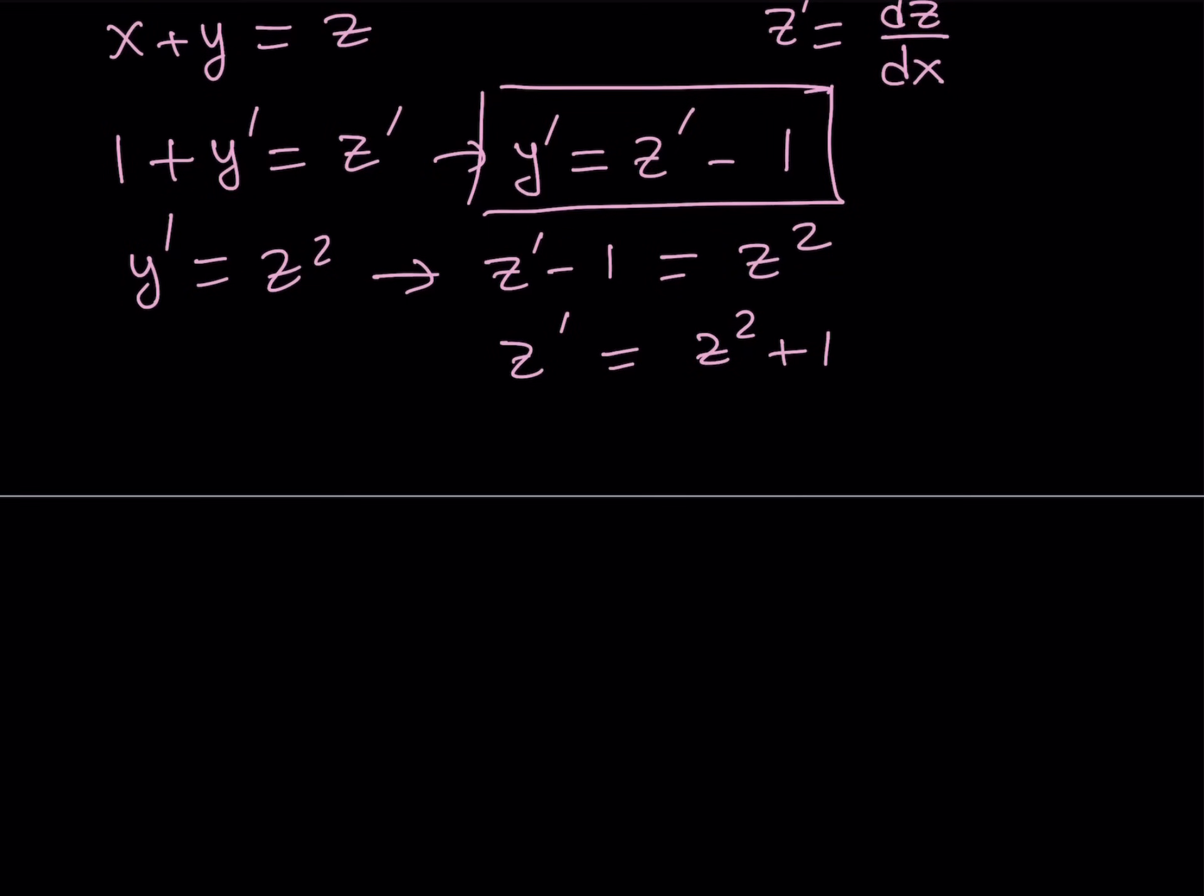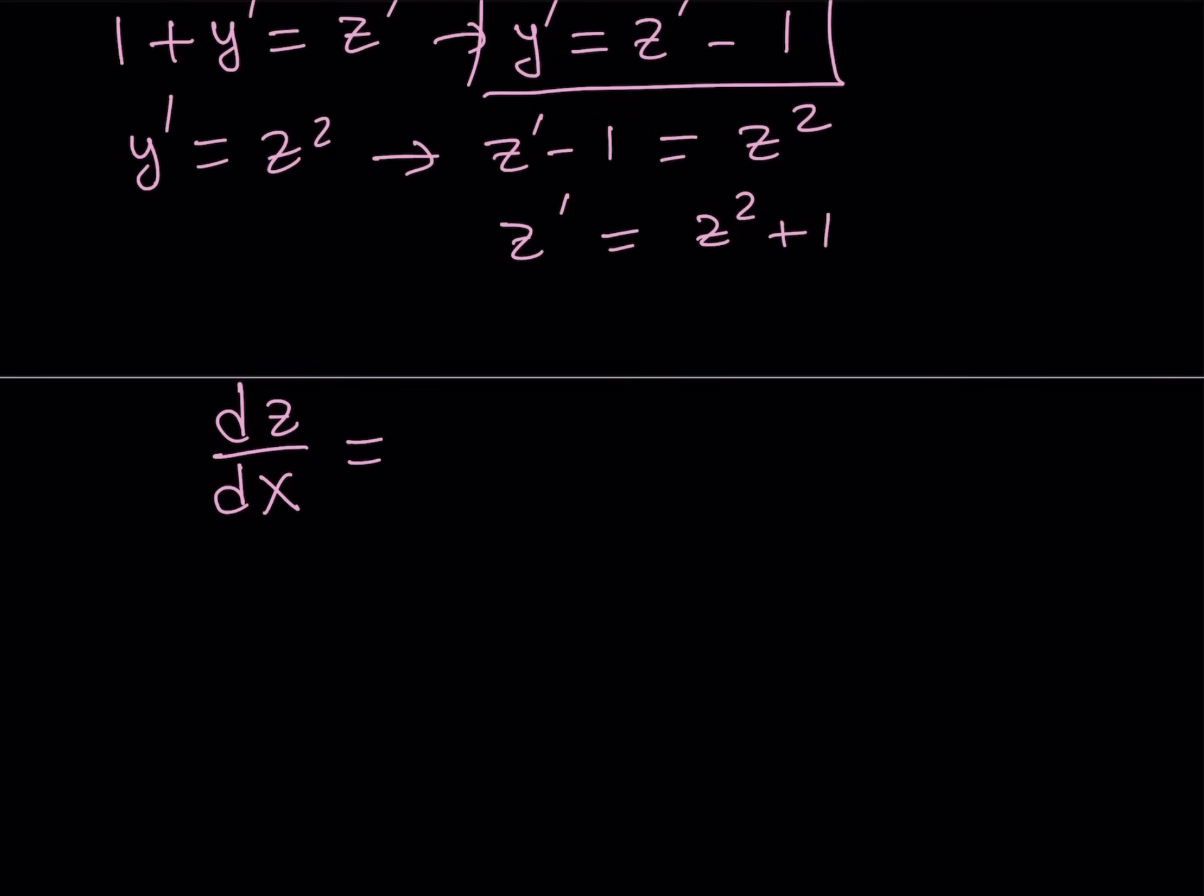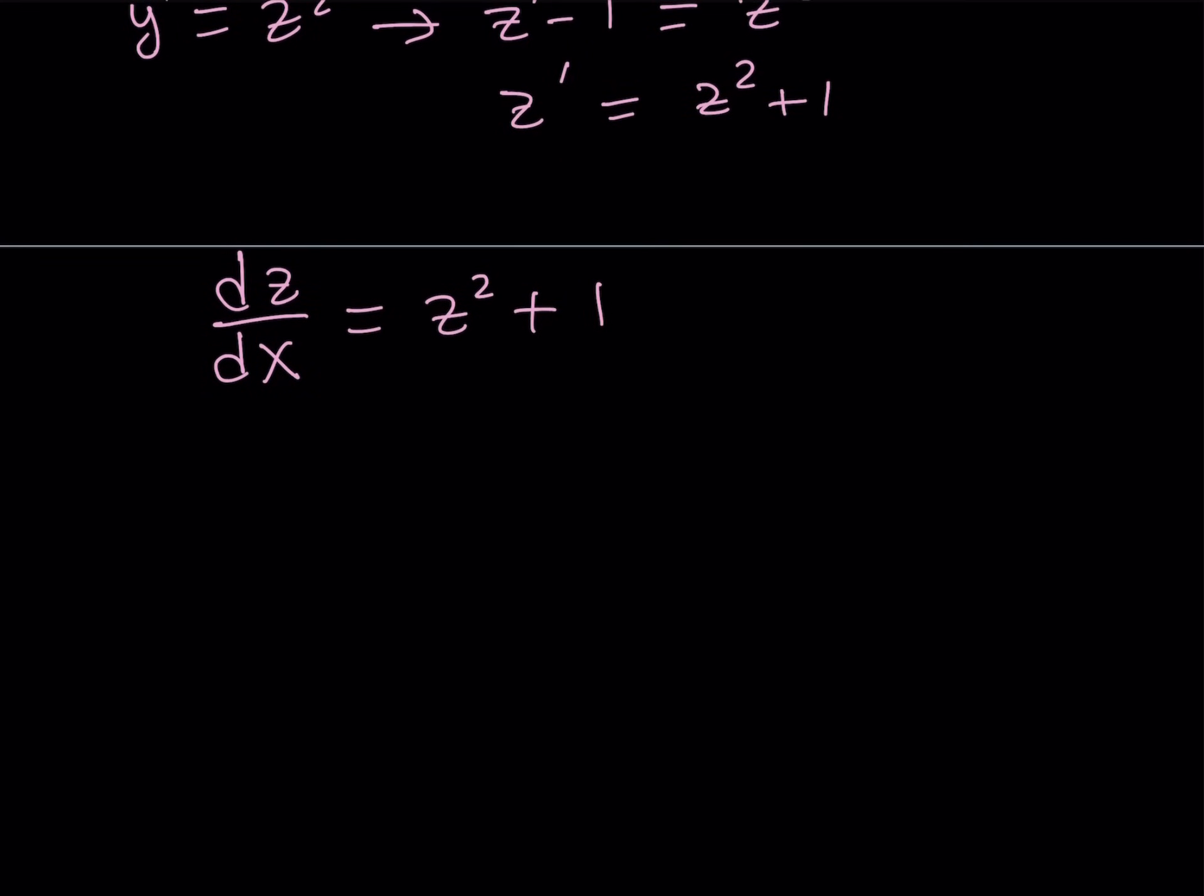So now, let's write z prime as dz over dx. That's what it means by definition. And then, it equals z squared plus one. Now, obviously, I want to solve for z first. And this is a separable equation, like I said earlier. So let's go ahead and separate the variables. I don't have any x's. I only have dx. That's okay.